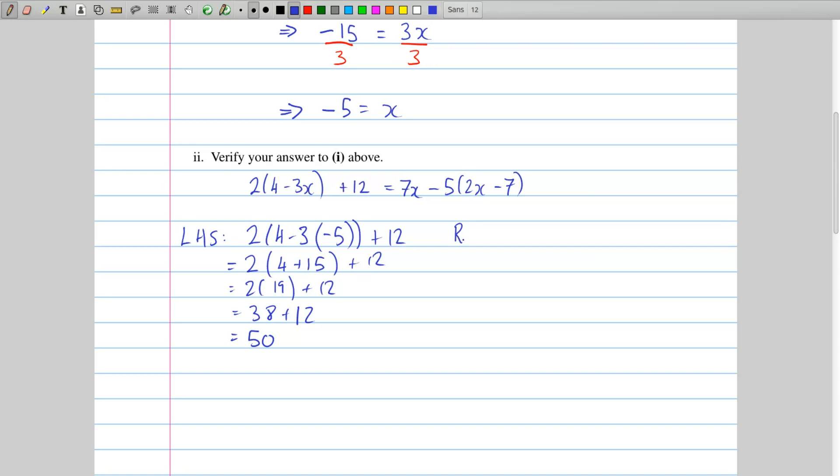So now we see if the right-hand side turns out to be the same thing, and if we get 50 from this, then that verifies the answer from part 1. So let's see what we get. 7 times x becomes 7 times minus 5. Then we've got a minus 5 by 2 by minus 5 minus 7. And so that's minus 35 there, minus 5. The 2 by minus 5 is minus 10, and a minus 7 is there as well. So it's minus 35 minus 5 by minus 17. Minus 35, then the minus 5 by minus 17 should give me plus 85. And if you do minus 35 plus 85, you end up with 50. And so since the left-hand side and the right-hand side turn out to be the same number, that is proof that the answer for part 1 was correct.